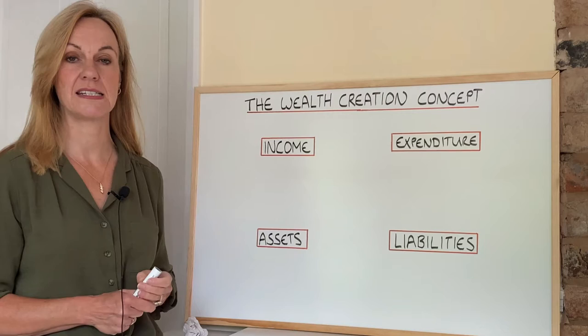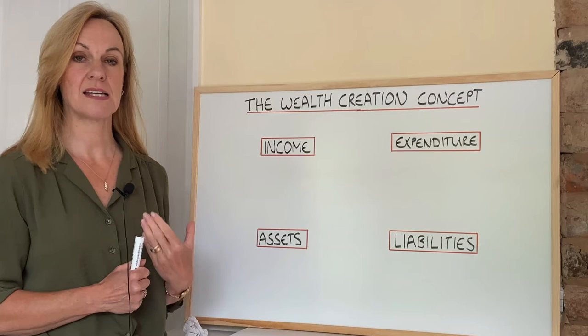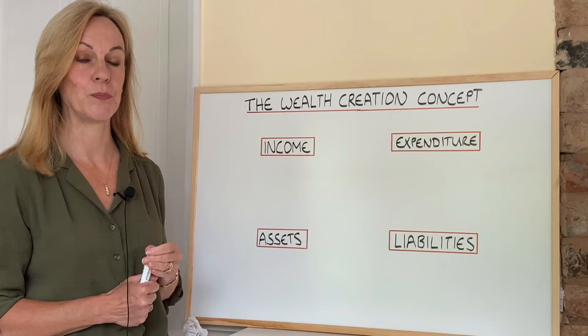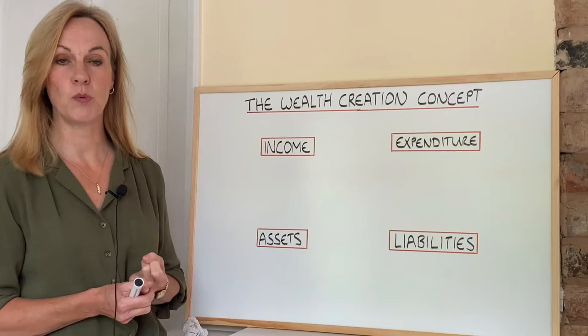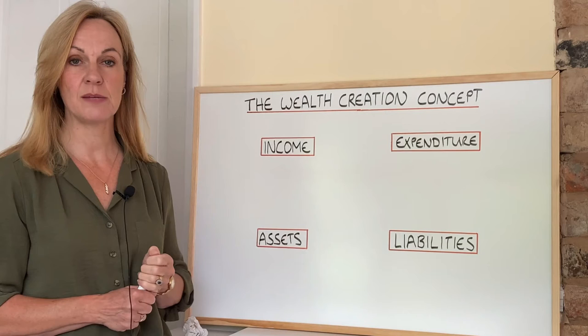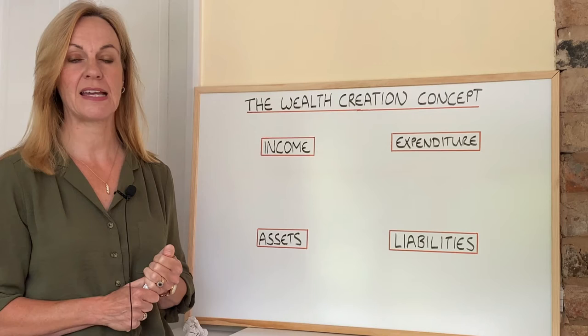Now, assets. Many people think that things like having a car or owning their own home is an asset, and in one sense of the word it is. However, in terms of wealth creation, we regard an asset as something that is going to put an income into your pocket — so an asset is an income-producing vehicle. Your car, which may have a loan on it, or your home, which may have a mortgage on it, wouldn't be assets because they're actually costing you money in the form of liabilities. Liabilities is any money that you owe to anybody — a car loan or a credit card bill, something like that.